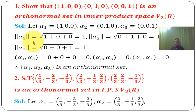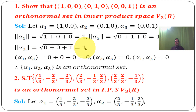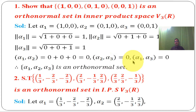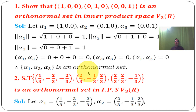Norm of alpha 1 = root over (1² + 0² + 0²) = 1. Norm of alpha 2 = root over (0² + 1² + 0²) = 1. Norm of alpha 3 = root over (0² + 0² + 1²) = 1. Inner product of alpha 1 and alpha 2 = (1×0 + 0×1 + 0×0) = 0. Inner product of alpha 2 and alpha 3 = 0. Inner product of alpha 1 and alpha 3 = 0. Therefore the given set of vectors alpha 1, alpha 2, alpha 3 is an orthonormal set.